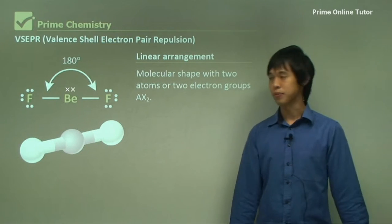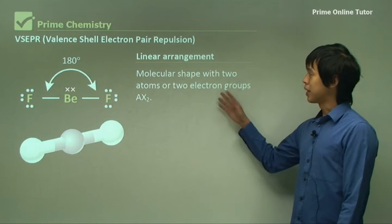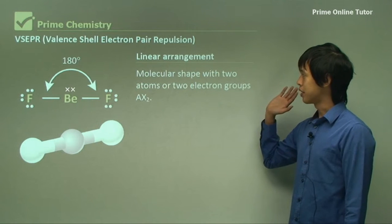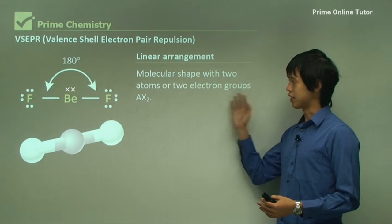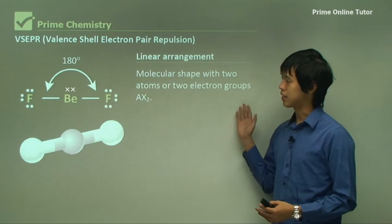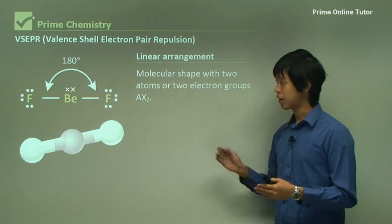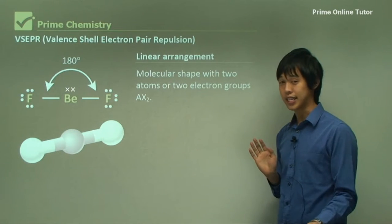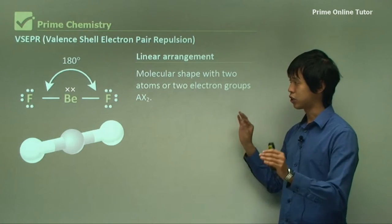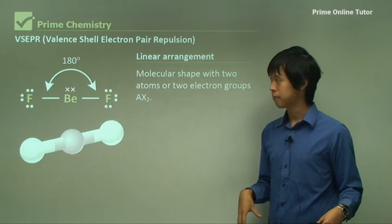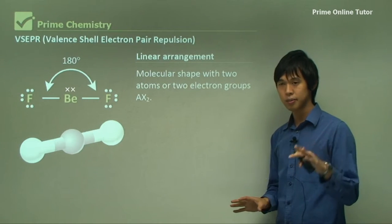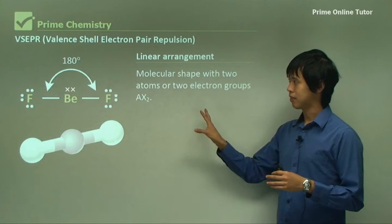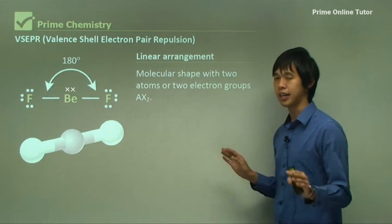So let's talk about some of the shapes. The linear arrangement is when the molecular shape with two atoms or two electron groups is like this, AX2. So you can see the beryllium is in the middle, and then there's two fluorine on either side. The beryllium shares its electrons with each fluorine, and vice versa. But you can see that because of the way the electrons are distributed, it forms a straight line, 180 degrees.